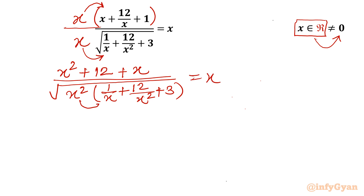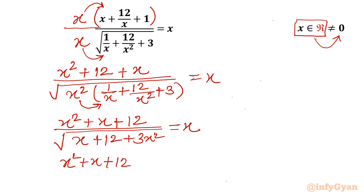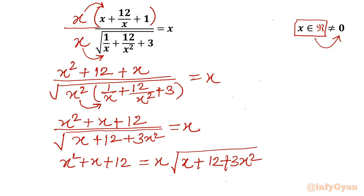Now I will multiply this x squared with the bracket terms: x squared plus x plus 12. This is the numerator. The denominator is x squared times 1 over x, so x; x squared times 12 over x squared gives 12; then 3 times x squared gives 3x squared. The right hand side is x. Now I will cross multiply, so I write x squared plus x plus 12 equal to x times the square root of x plus 12 plus 3x squared.